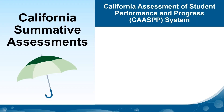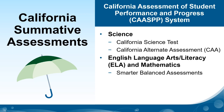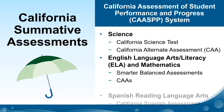California administers a number of summative assessments which address different content areas, different student populations, and different purposes. Most of the summative assessments fall under the umbrella of the California Assessment of Student Performance and Progress, or CAASPP, system. This includes Smarter Balanced Assessments in English Language Arts and Mathematics, the California Science Test or CAST, the California Alternate Assessments in ELA, Math, and Science, and the California Spanish Assessment.